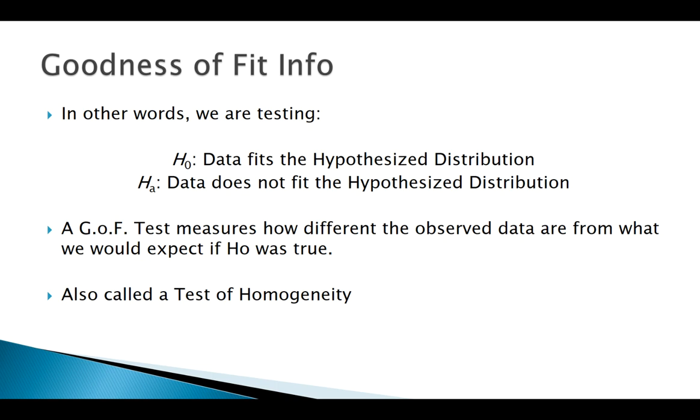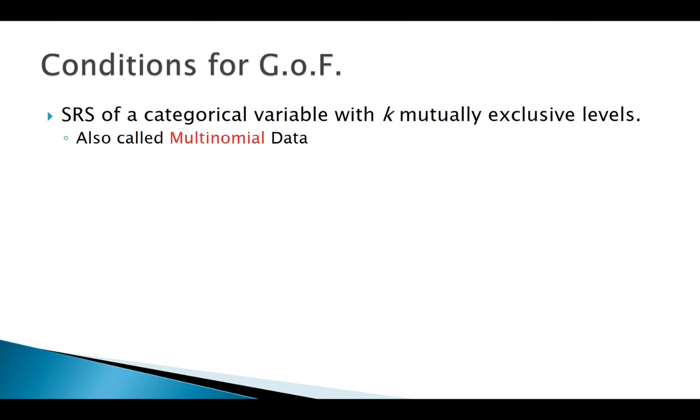Whenever we do any of these tests, we're going to have some sort of conditions that we have to check. The type of data that we'll be using is categorical data, and it'll be data that fits what's called a multinomial distribution. Binomial we know about—that kind of looks similar. Binomial is where we only have two potential outcomes.